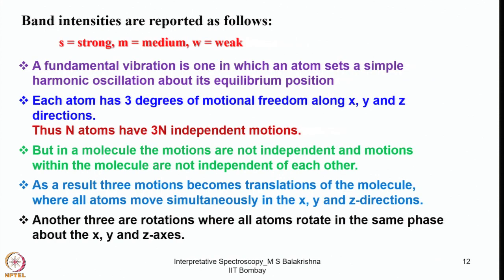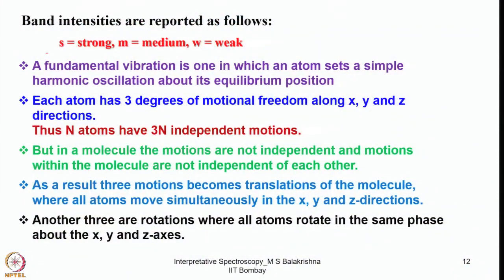Band intensities are reported as follows: strong is denoted S, medium is M, weak is W, and sharp is SH. A fundamental vibration is one in which an atom undergoes simple harmonic oscillation about its equilibrium position.